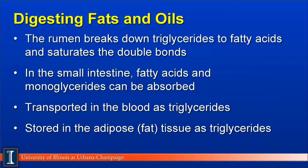When fats and oils are digested in the dairy cow, the following things will happen. First, as they enter the rumen, the bacteria will break down the fats and oils — triglycerides — to free fatty acids and will attempt to saturate the double bonds. That's why tallows are more saturated fats and are less healthy for us humans. Once they get to the small intestine, these more saturated fatty acids and monoglycerides can then be absorbed across the intestinal lining, which are then transported in the blood as triglycerides. If there is too much triglyceride in the bloodstream, the cow will then store that excess as adipose tissue as triglycerides, and the cow gets fat.